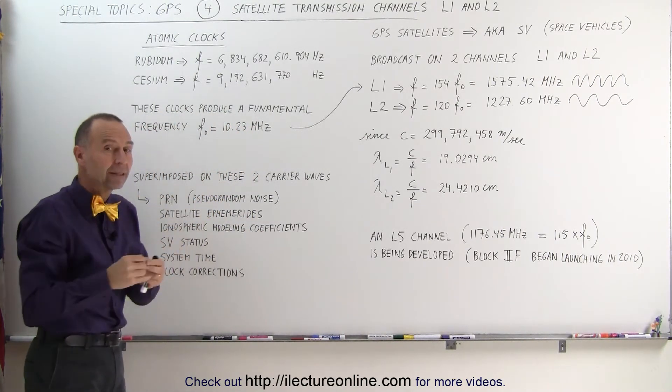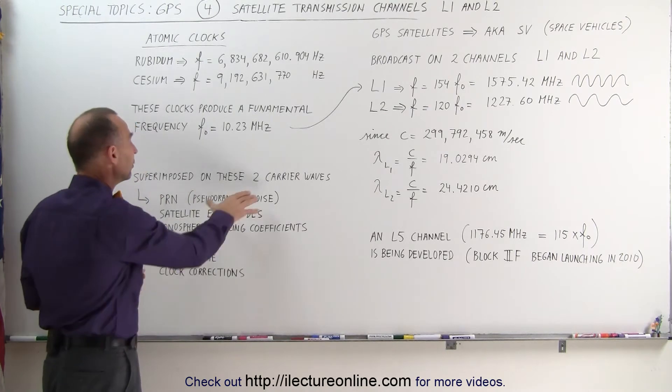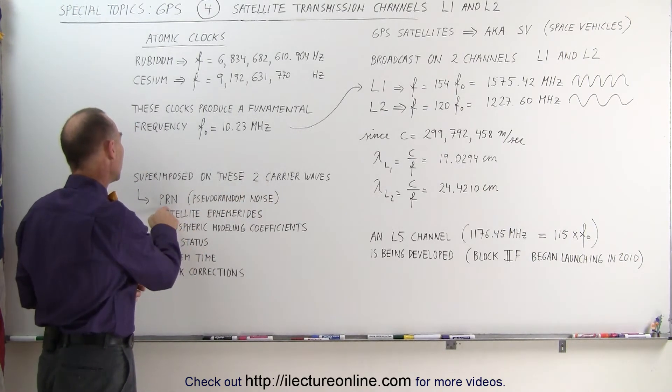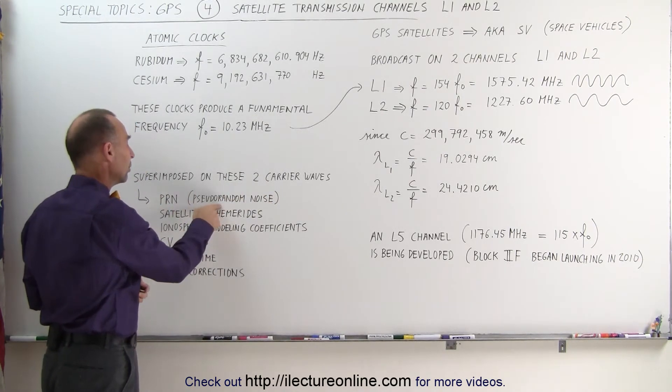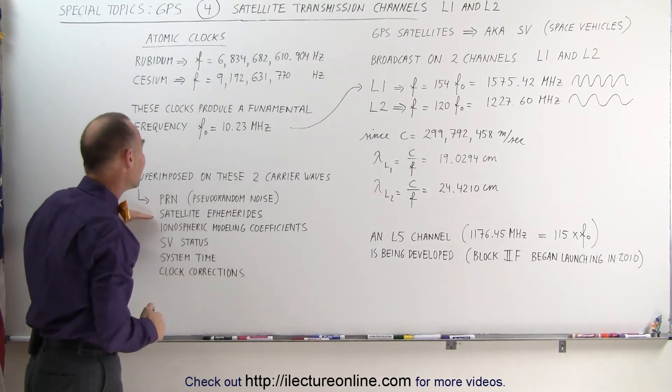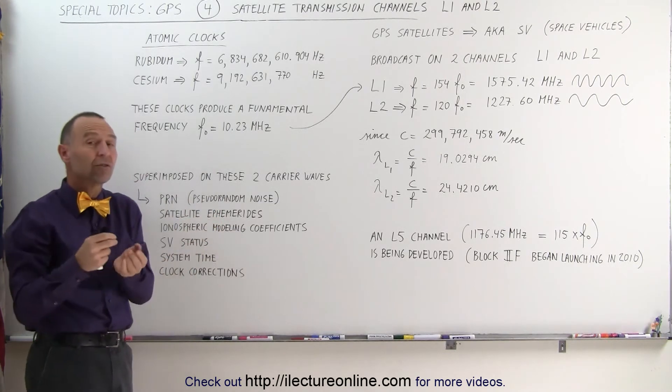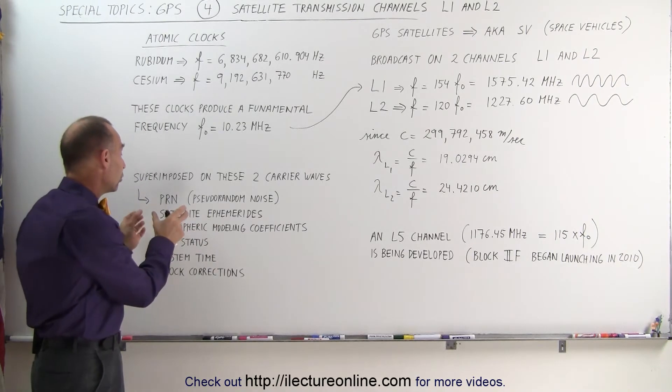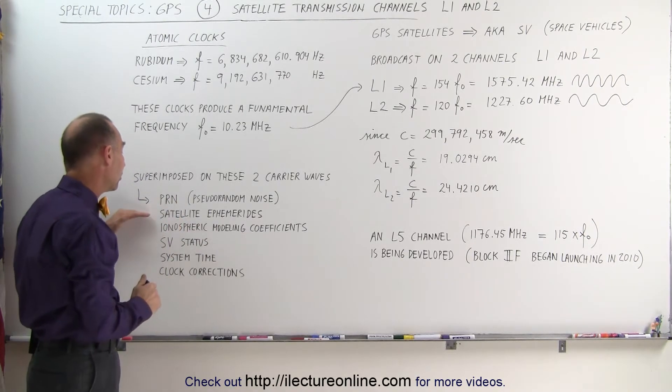Those are superimposed, and we'll talk about the techniques in which we do that. On these two carrier waves, we have what we call the PRN signal, which is the pseudorandom noise, and the satellite ephemerides. The ephemerides is the information so we know the position of each satellite and the orbits of each satellite.